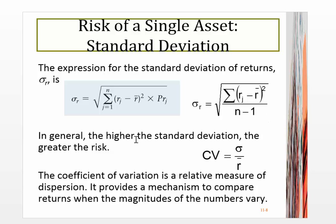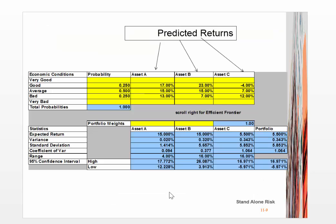The coefficient of variation is a relative measure of dispersion that provides a mechanism to make comparisons when the magnitudes of numbers are very different — it puts things on an equal playing field. Before doing the calculations, let's look at how this plays out in the spreadsheet. There is a worksheet called 'Standalone Risk.' You input the probabilities — 0.25, 0.50, 0.25 — and with respect to the returns, remember the good outcomes go at the top and bad at the bottom, which is backwards from the other table.